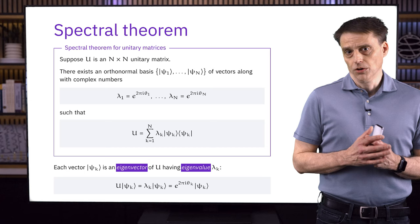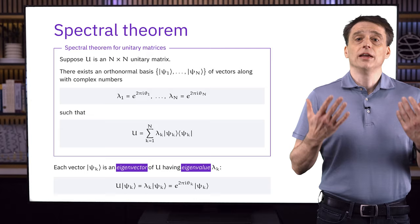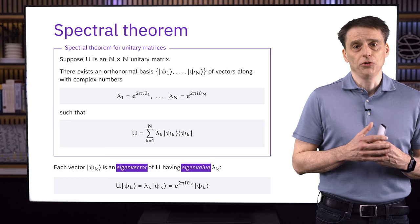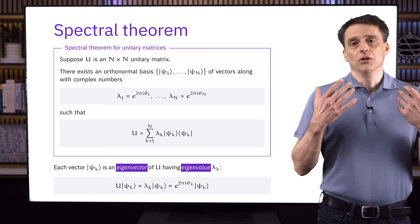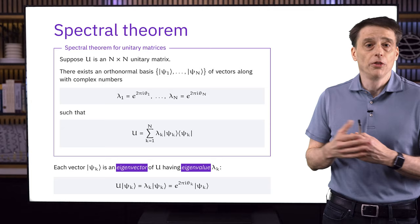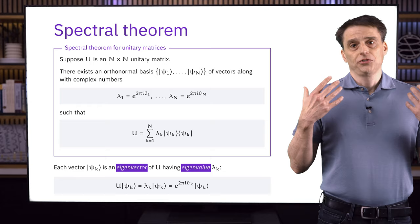An important thing to notice is that each vector psi_k must be an eigenvector of the matrix u with corresponding eigenvalue lambda_k, meaning u times psi_k equals lambda_k times psi_k. What u does to each of these vectors is simply to multiply it by the corresponding number lambda_k. The theorem tells us there is an orthonormal basis of these eigenvectors. If you multiply the expression of u to any psi_k and use orthonormality, you'll get a sum in which all terms are zero except one, which is exactly this eigenvalue equation.